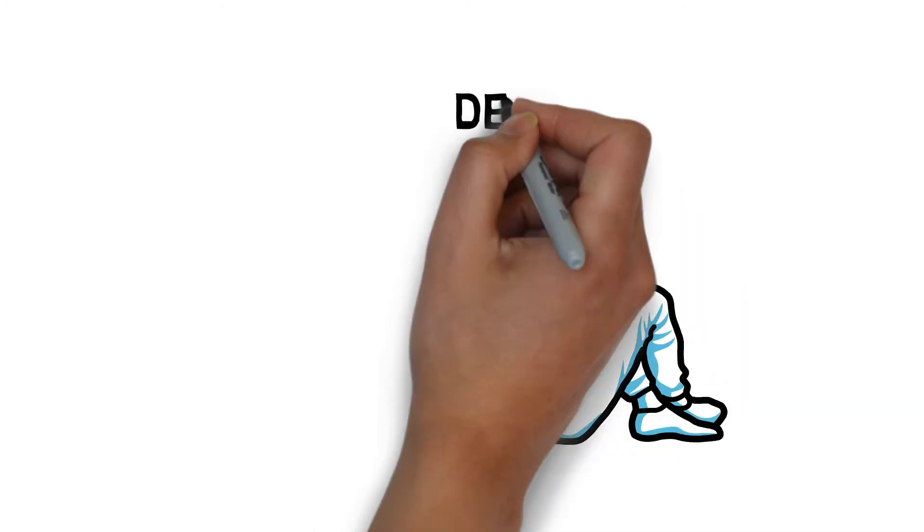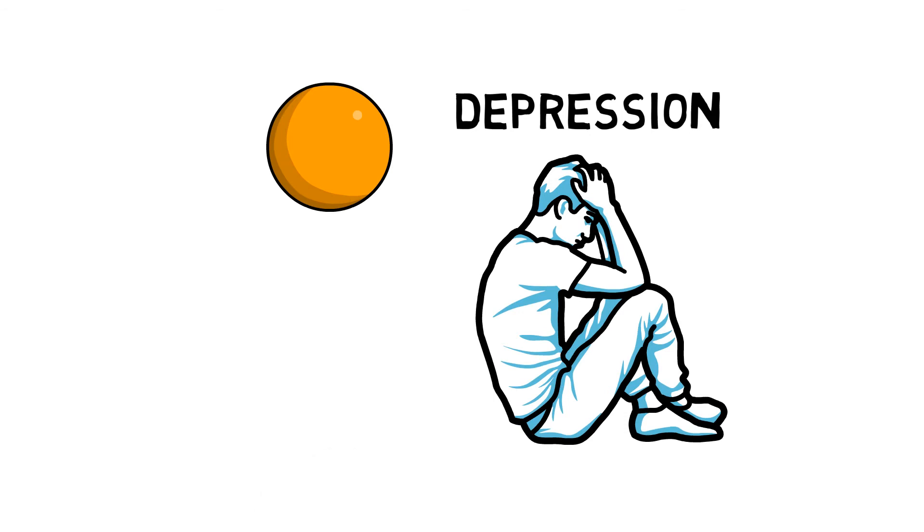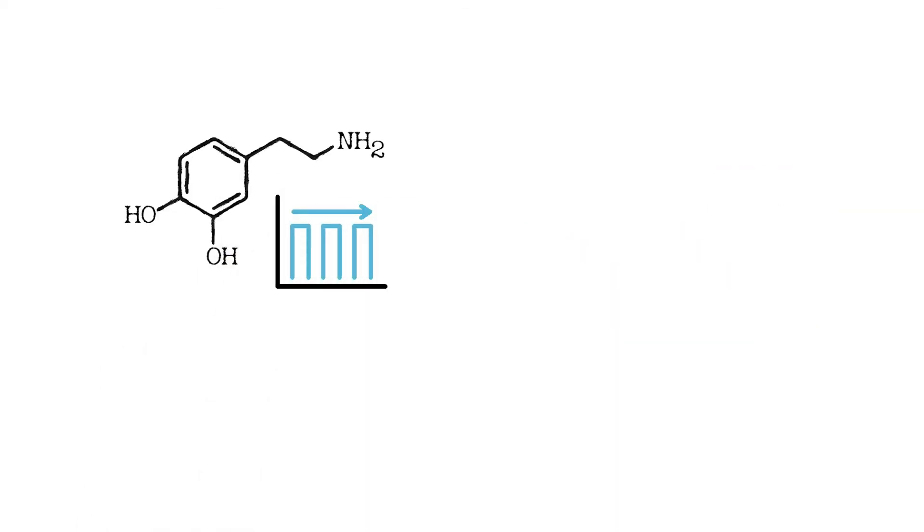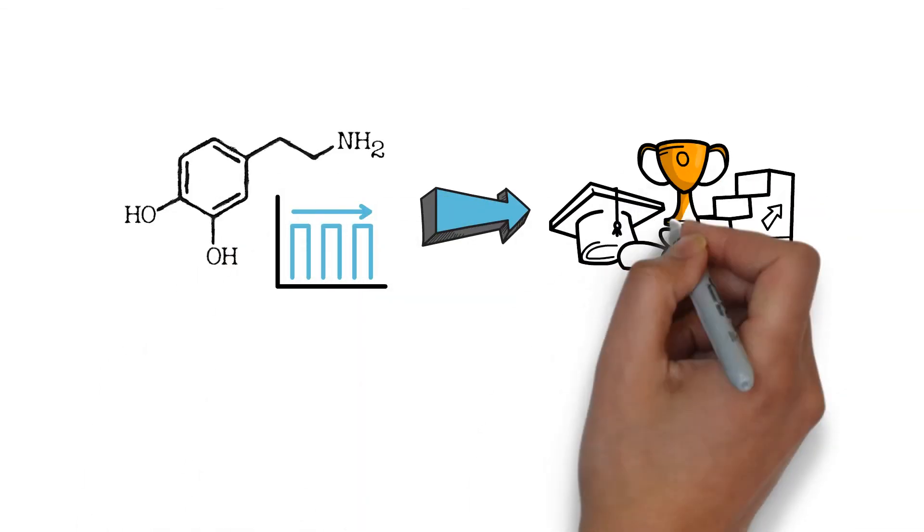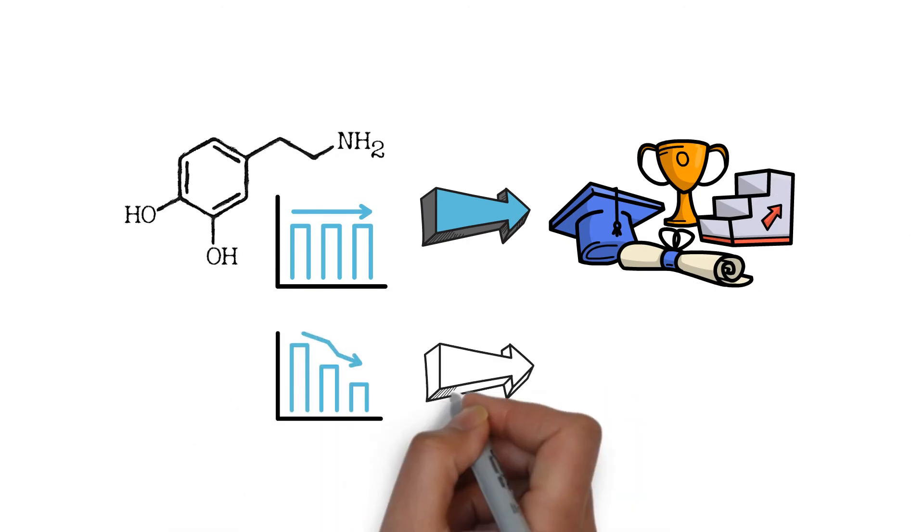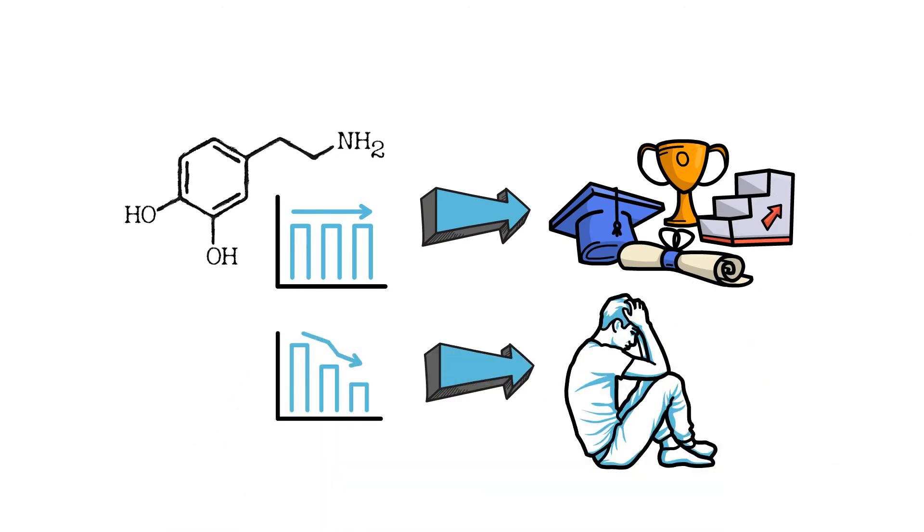Depression is usually considered a group of complex psychological and neurological conditions which is related to lots of factors. In these factors, the level of dopamine is an important one. Dopamine level is usually thought to be linked with the feeling of reward, and a low level of dopamine will cause lack of motivation and loss of interests for people suffering from depression.